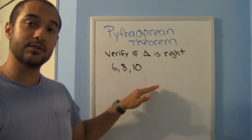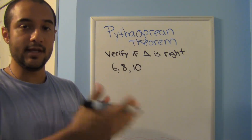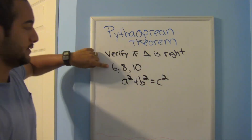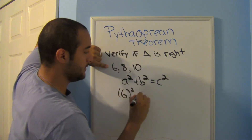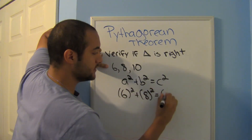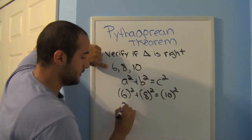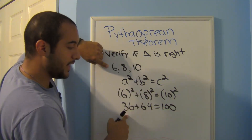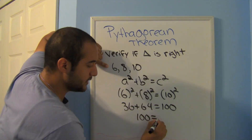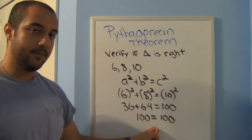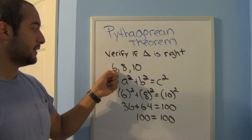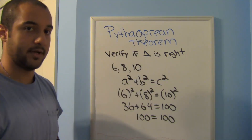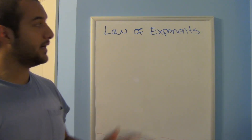Here they're asking us to verify if the triangle is a right triangle. They gave us three numbers — all we do is substitute and see if both sides are equal: a squared plus b squared equals C squared. So: 6 squared plus 8 squared equals 10 squared. That's 36 plus 64 equals 100. When we add those up, 100 equals 100. Since this is true, the lengths they gave us form a right triangle.